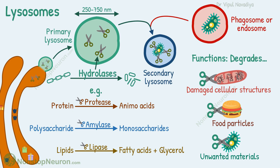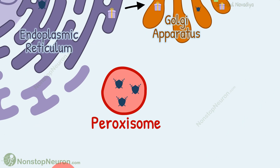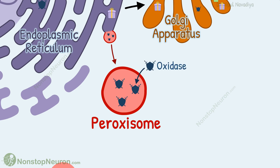We will study more about the functions of lysosomes in a separate video. For now, let's move to peroxisomes. Peroxisomes are believed to be formed by pinching off from smooth endoplasmic reticulum, rather than the Golgi apparatus. And instead of hydrolase enzymes, they contain oxidases — for example, catalase.